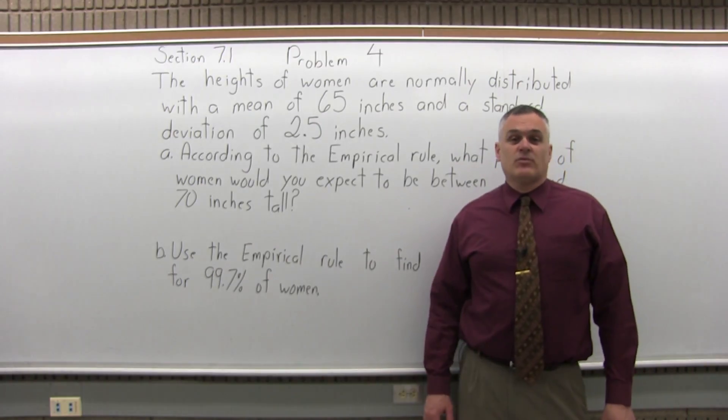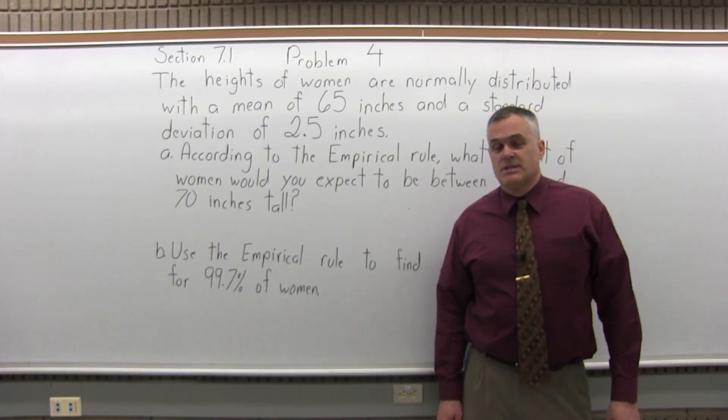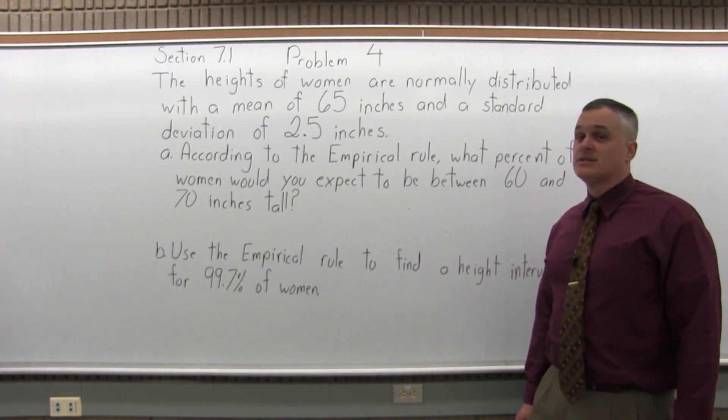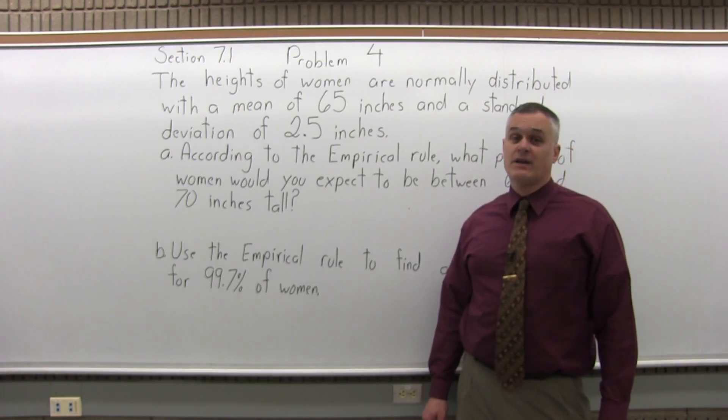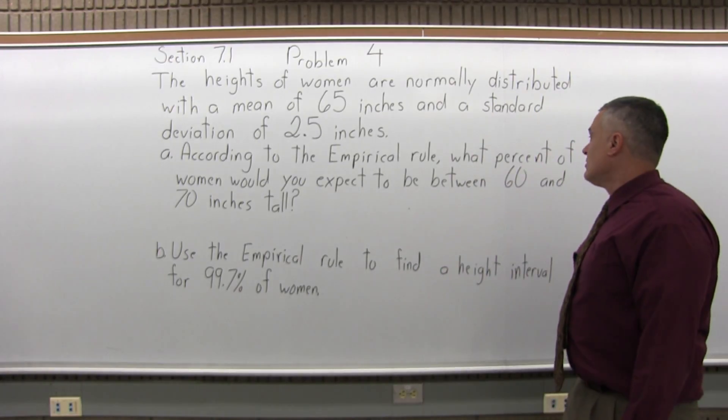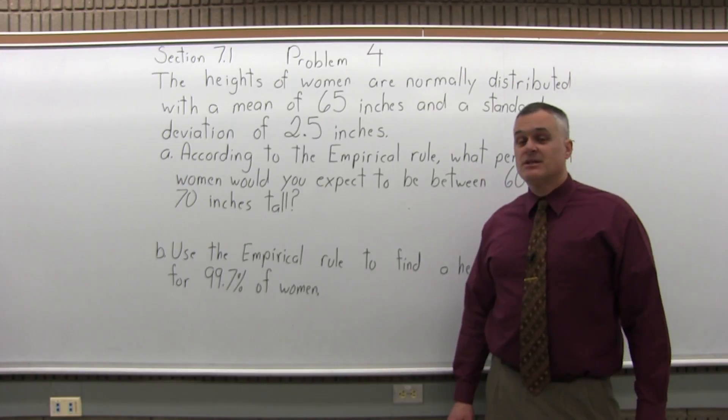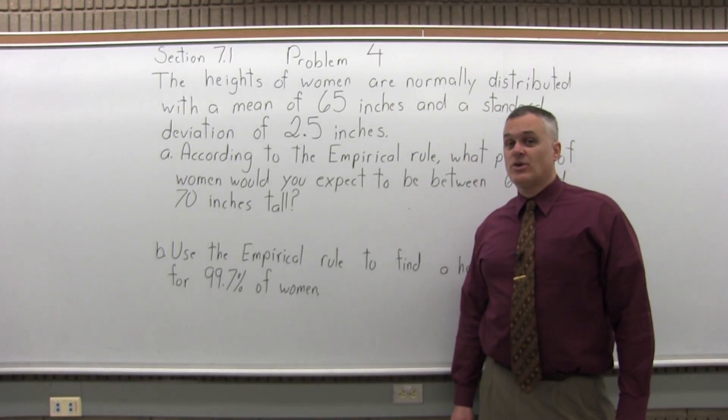This is Section 7.1, Problem number 4. It says, the heights of women are normally distributed with a mean of 65 inches and a standard deviation of 2.5 inches. According to the empirical rule, what percent of women would you expect to be between 60 and 70 inches tall?